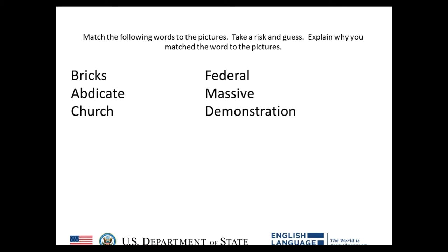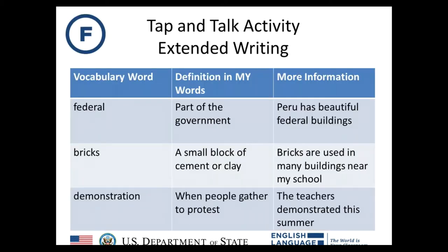When students are done tapping and talking, you give them the vocabulary words that go with each picture from the story they're about to read. The words for these photos are: bricks, abdicate, church, federal, massive, and demonstration. Students then match each picture with the correct word by writing it next to the picture or placing cut-out labels. When you go over the correct answers, encourage students to explain why they matched the words as they did — this gets them talking. You can also use this as a review the next day by having the words and pictures on their desks again.